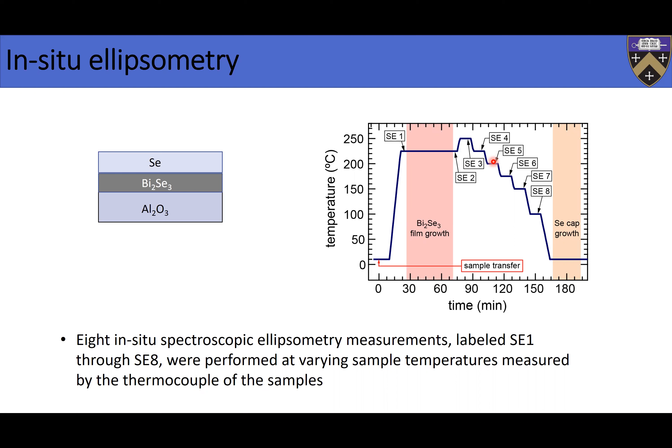One of the problems with ex-situ ellipsometry is that after you grow the sample and take it out, you can have a lot of oxides and other contamination growing on your sample. If you do ex-situ ellipsometry, you have to model that contamination as well — which is not easy. Modeling high-quality samples with many layers is hard by itself. So really, doing in-situ measurements avoids those post-growth problems, allowing you to get dielectric functions more precisely.